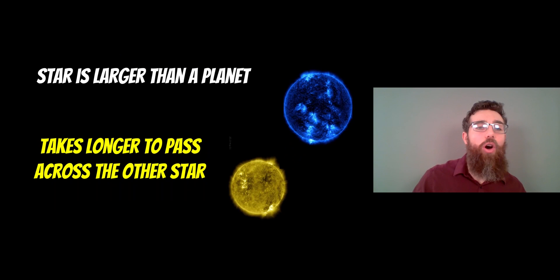Well, a star is obviously larger than a planet. So as they begin to pass in front of each other, it takes longer to cross across the other star. It never fully blocks out the light for any period of time, so you don't get that flat bottom. And because it takes a longer time to pass in front, you get a more angled edge to the transit or the eclipse.